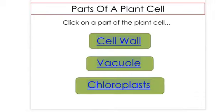Plant cells have different organelles to animal cells, such as cell wall, vacuole, and chloroplast. Let's look at these in detail.